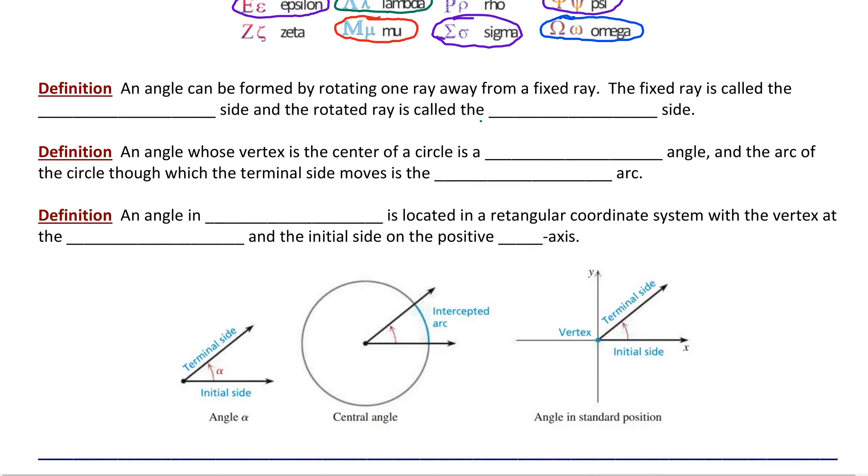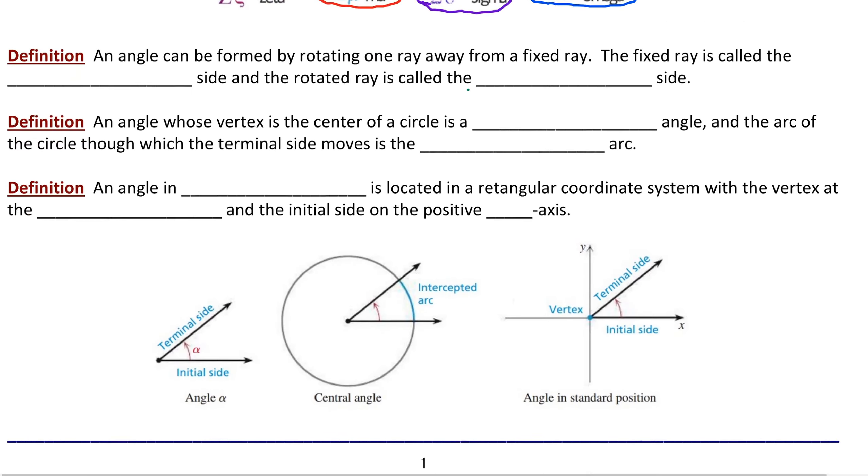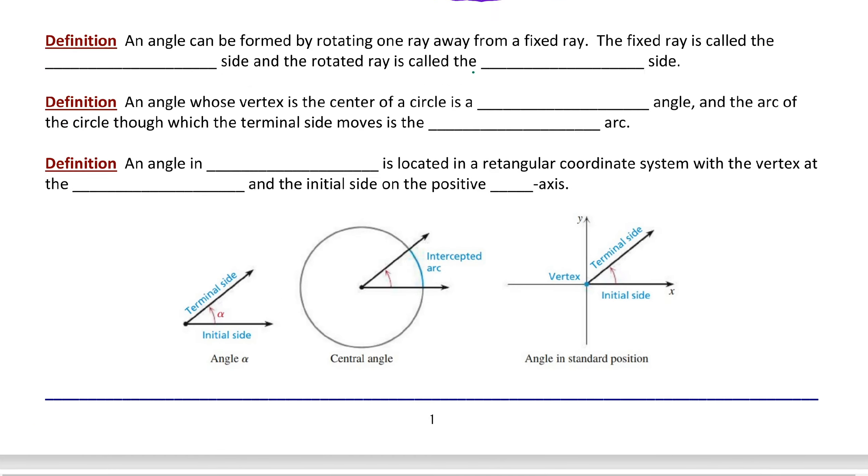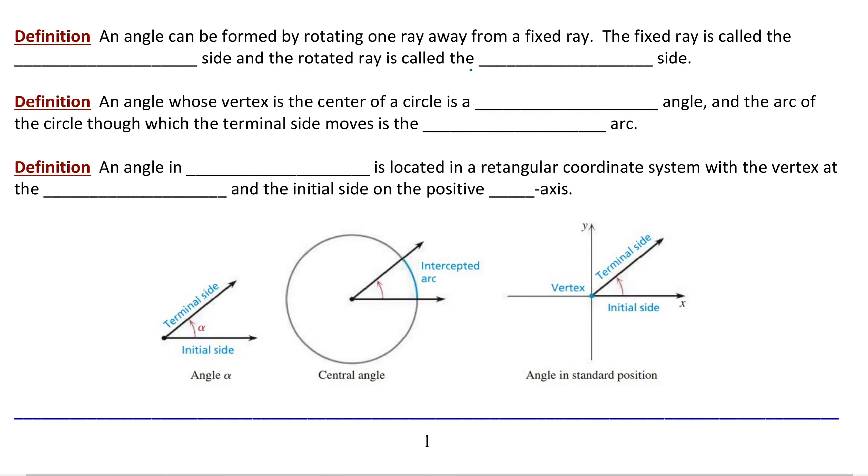To continue establishing our foundation, let's talk about some more basic definitions. Here, we're further going to develop the anatomy of an angle. An angle can be formed by rotating one ray away from a fixed ray.